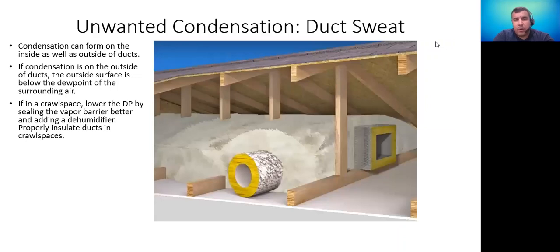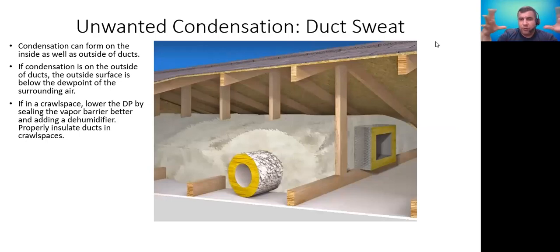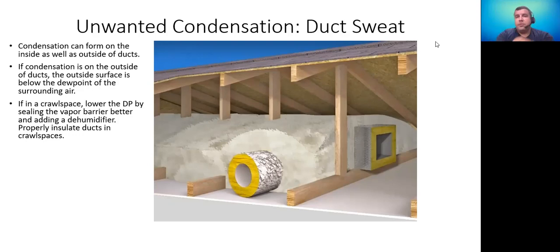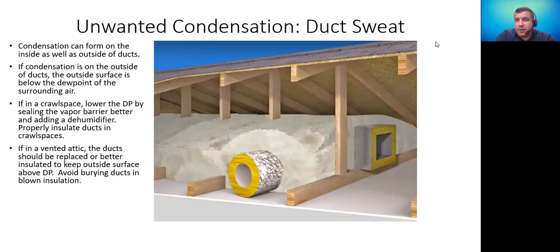For ducts in an attic, we don't typically recommend sealing an attic unless doing full spray foam encapsulation. What we don't want to see is ducts buried in blown insulation. When buried, moisture still reaches the ducts, creating a cool pocket with very humid air — the duct surface is below dew point and condensation forms. If you have ducts in the attic, they need to be very well insulated — R-8 or higher — and kept out of the blown insulation. That way the outside jacket surface can heat up from attic heat and stay above the dew point temperature. Properly insulate ducts in both crawl spaces and attics, and avoid burying them in blown insulation.